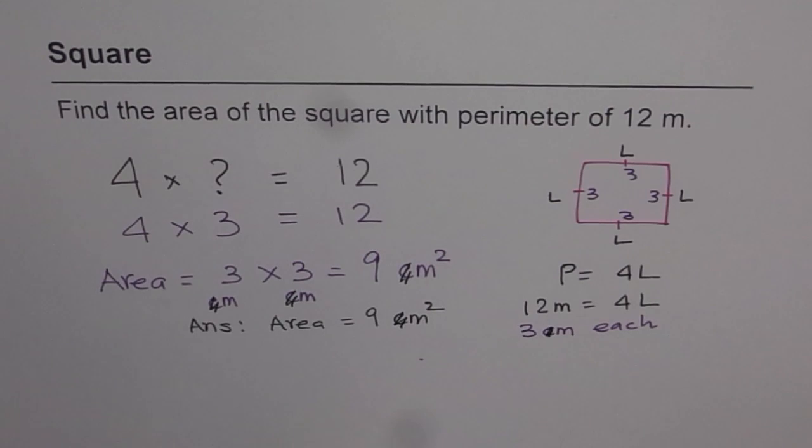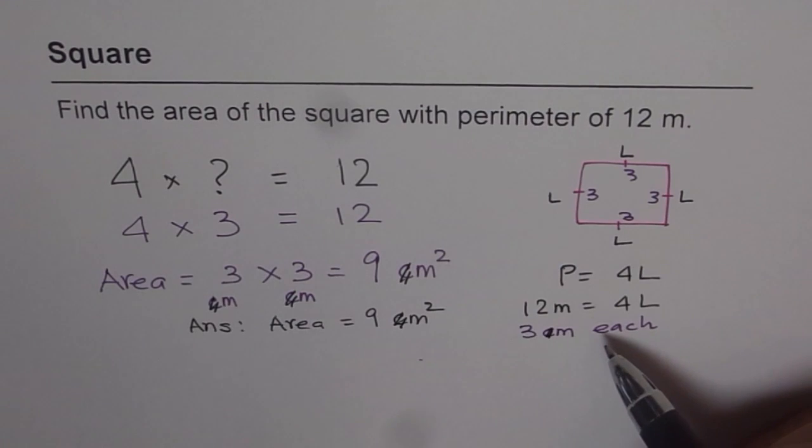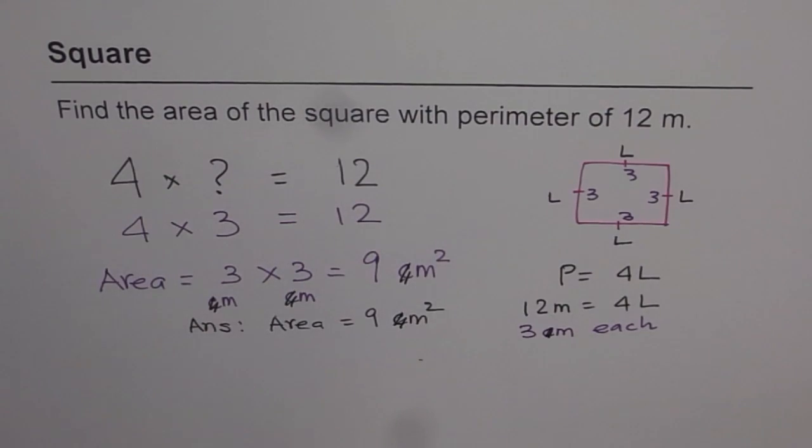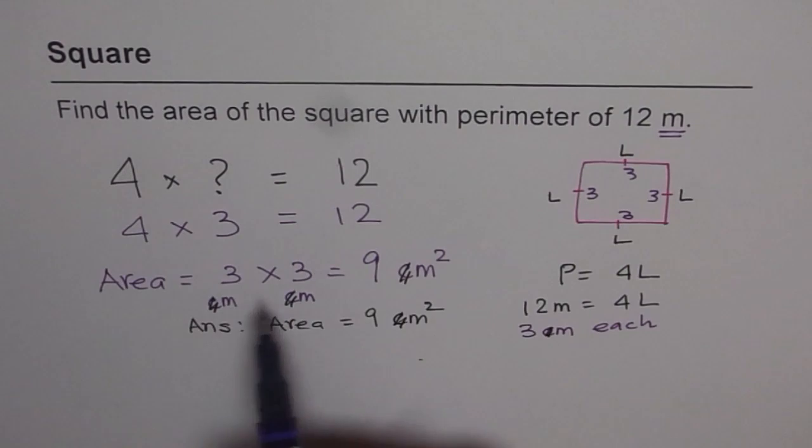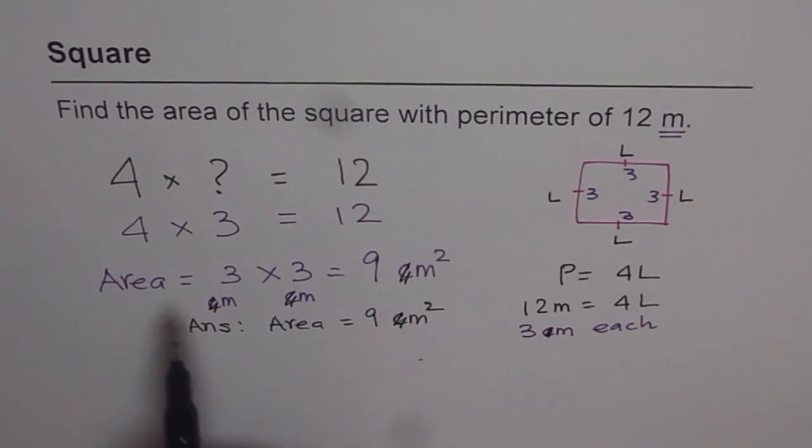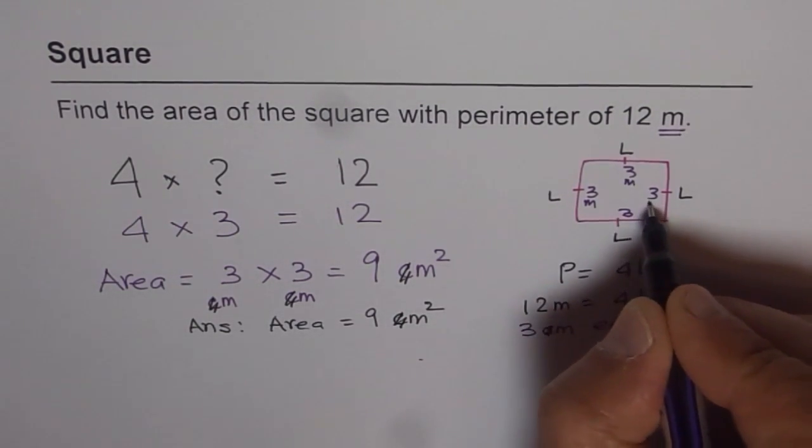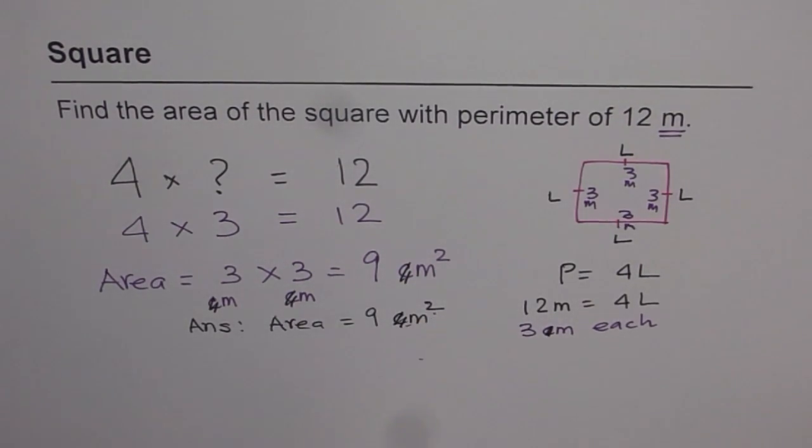So that is how it helps to check. You should always check when you do your question. So what we found was that the perimeter was in meters. So our unit should have been meters. It is 3 meters each side. So when you multiply, you get meter square. So our area is 9 meters square.